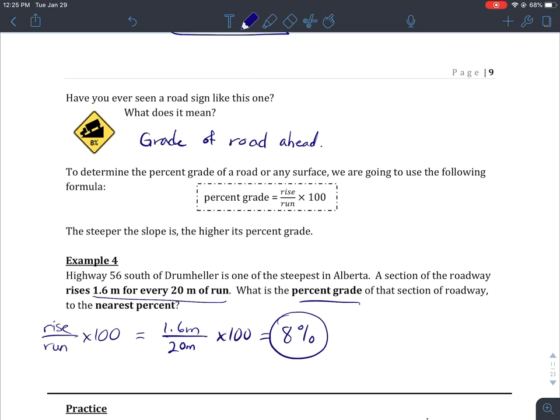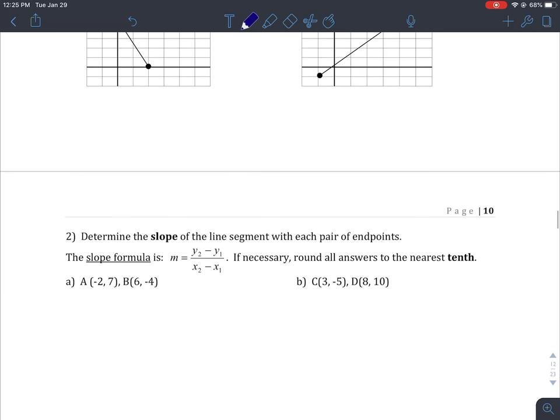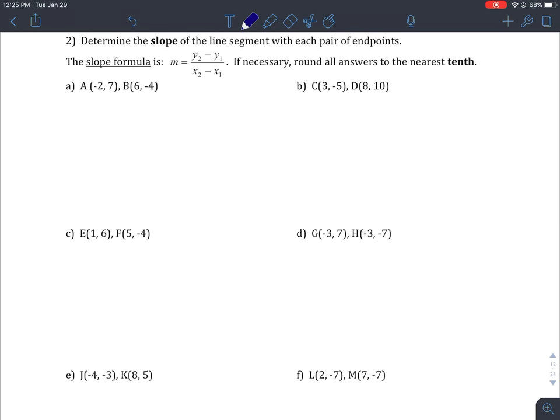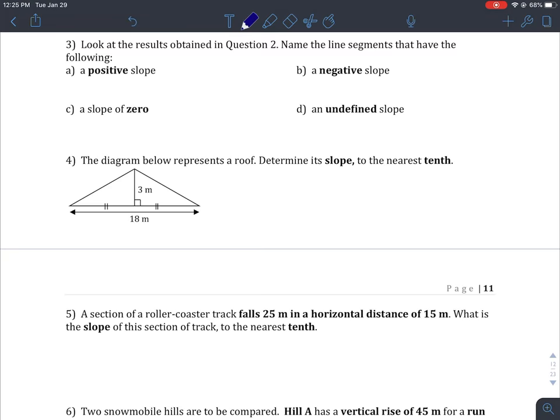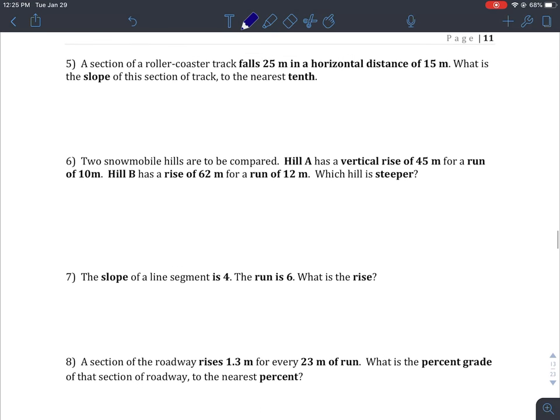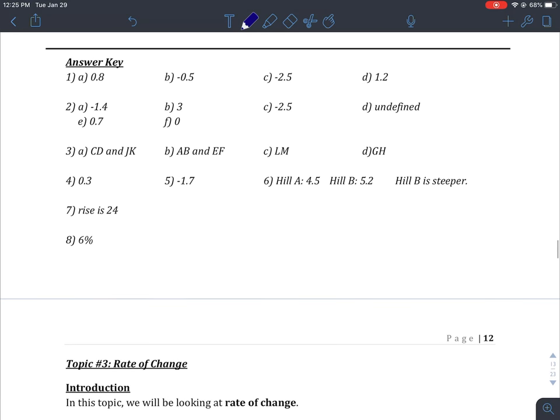There's the end of that second topic. Down below there are some practice problems - you can pause the video to try them out. There's a bunch here that deal with the slope formula. It's really important that you label the points in the correct way. There is your answer key. In topic three, our next video, we'll talk about rate of change and what that means.